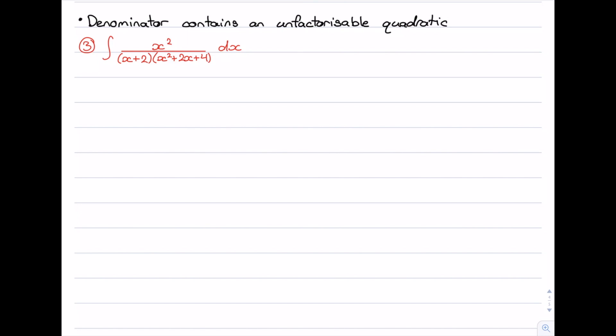In this video we'll be looking at solving integrals using partial fractions, and these examples are going to have denominators which contain an unfactorizable quadratic. Now of course we can factorize all quadratics over the complex numbers, but when we're dealing with integration we generally like to stay within the realm of the reals. So our first example here is the integral of x² over (x+2)(x²+2x+4).